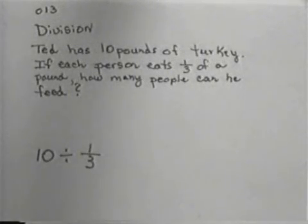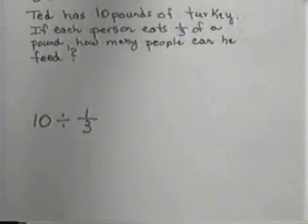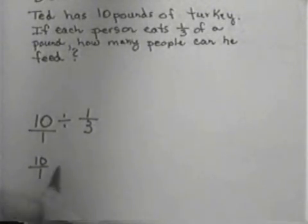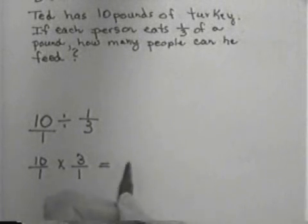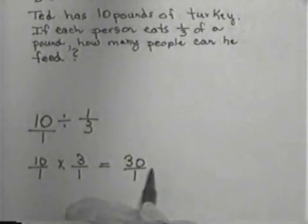This becomes division. So I have 10 divided by a third. In order to be able to do that, I need to put a one under my 10 to make everything look like fractions. Then I have to invert before I can divide or find the reciprocal of my second fraction or my divisor. So I make my one-third three over one.